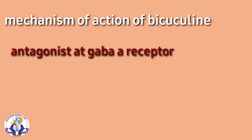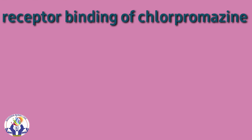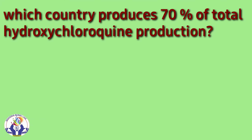The next question was about the receptor binding of chlorpromazine — this drug binds to 5-HT2 and D2 receptors. In the following question, it asked about the country which produces 70% of total HCQ production, and the answer will be our motherland, India.